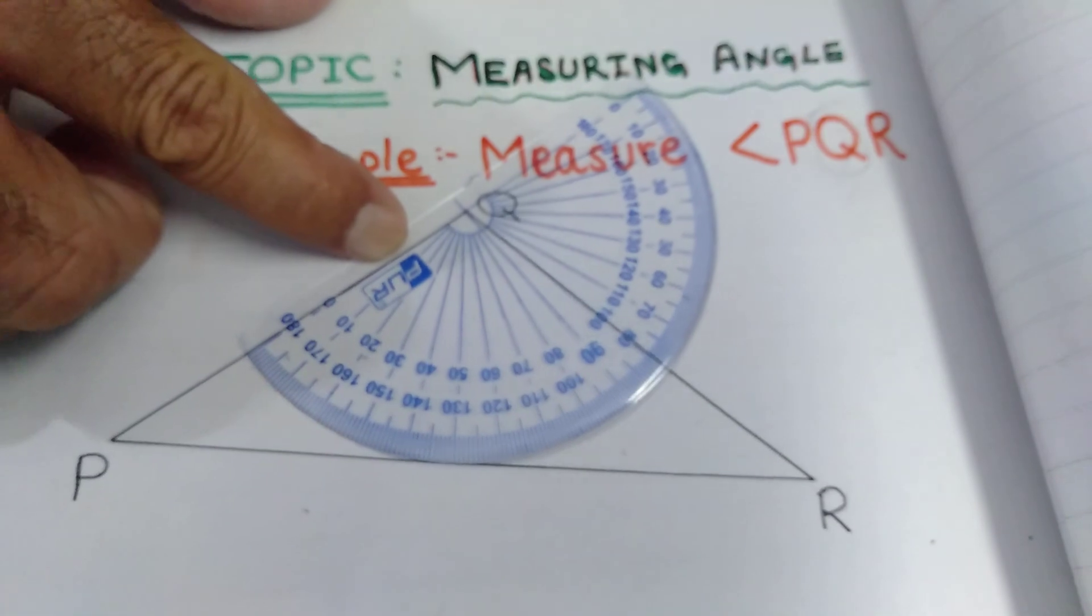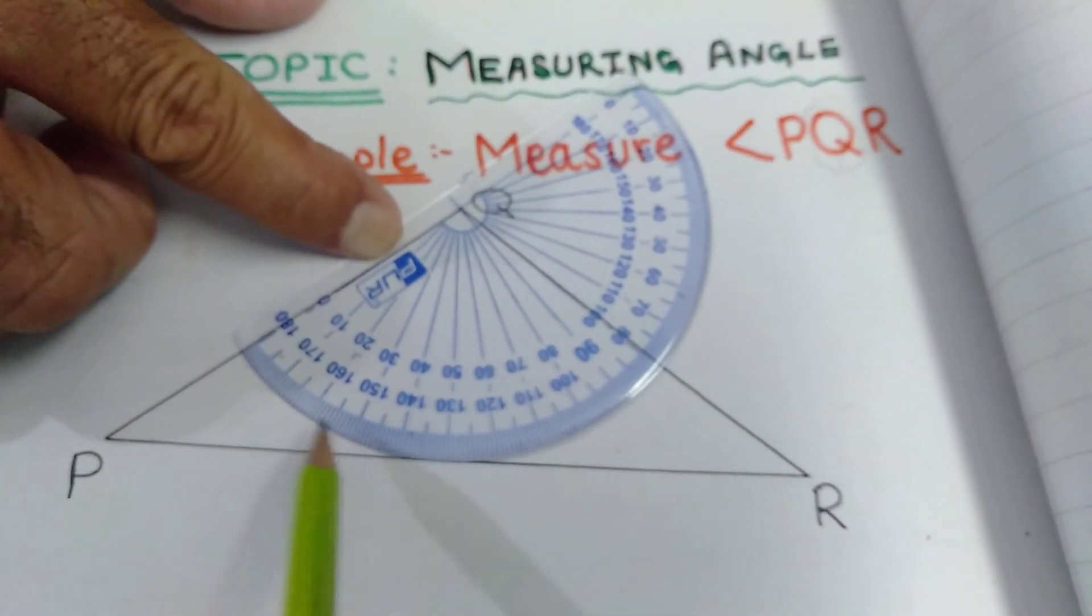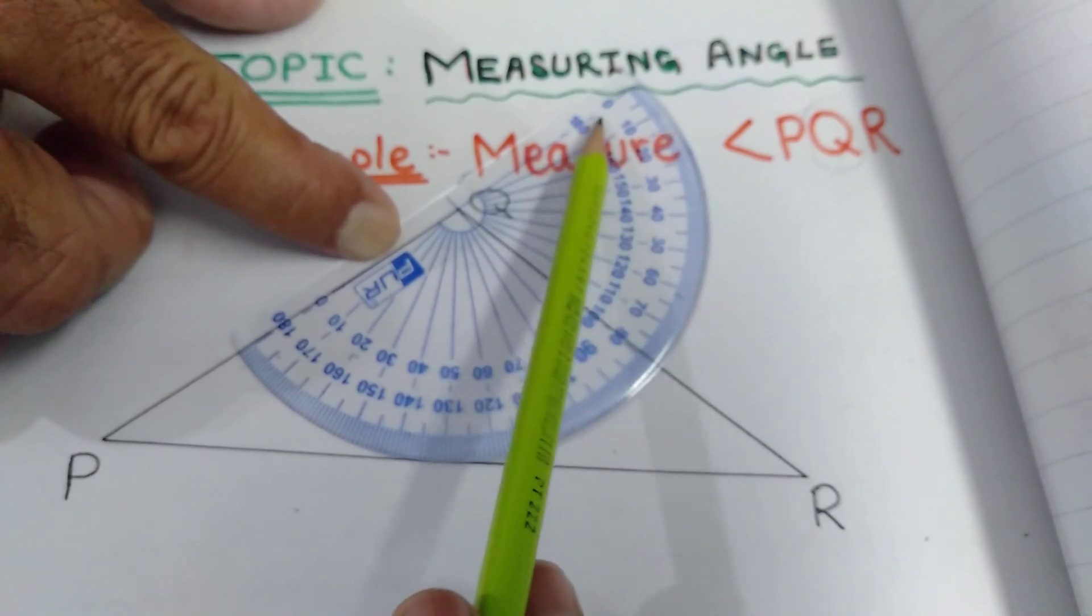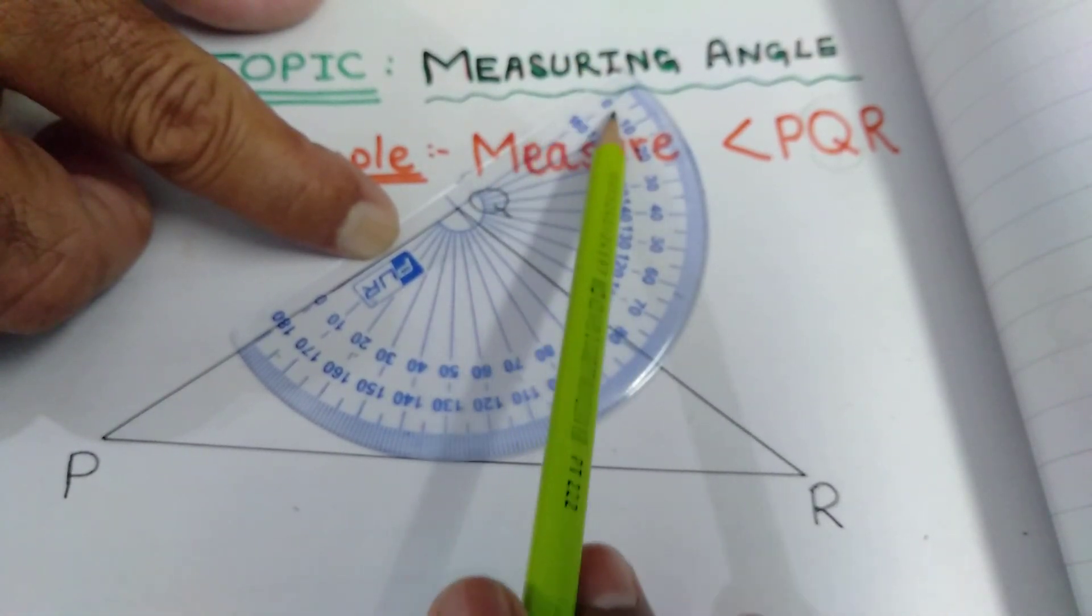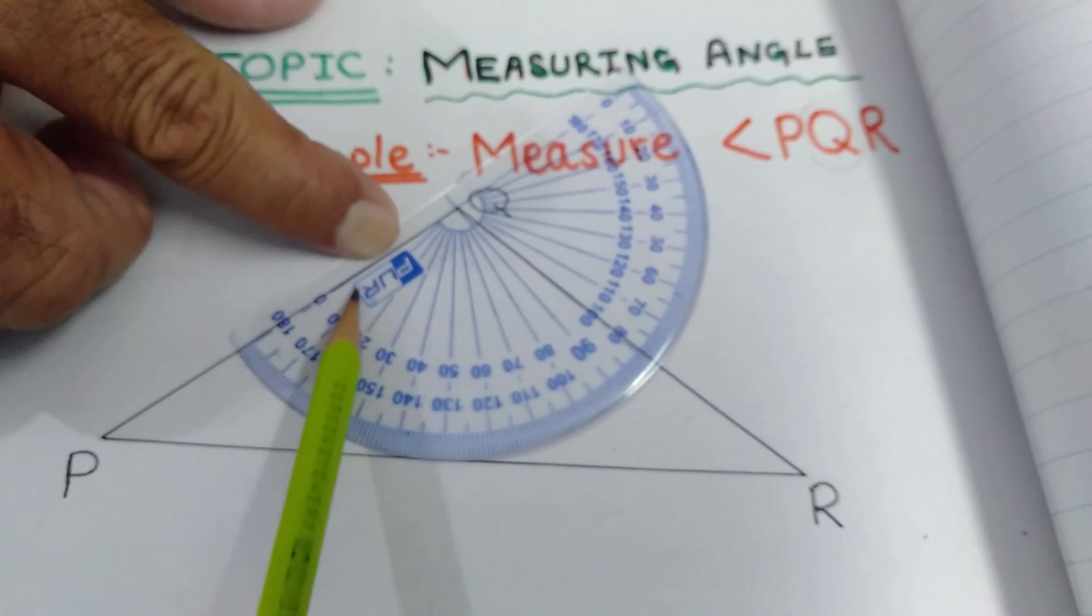Which zero will be used? This one or this one? We will use this one not that one because it is not on the line. This zero is on the line.